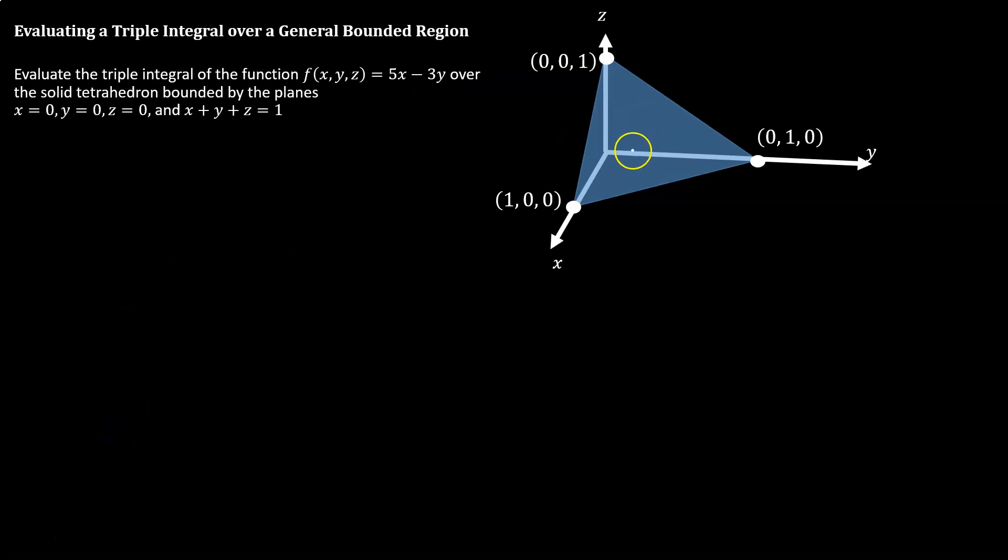We'll start by defining our region E, the set of x, y, z that our integral is going to span over. Now we see that we're bound by x equals 0, y equals 0, z equals 0. So nothing below the xy plane, nothing behind the xz plane, and nothing behind the yz plane either. So we know that x, y, and z all have a minimum value of 0.